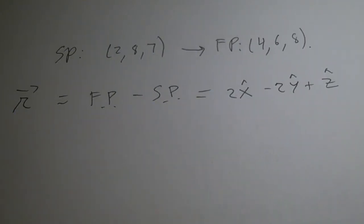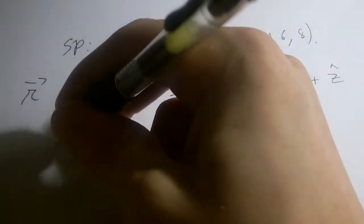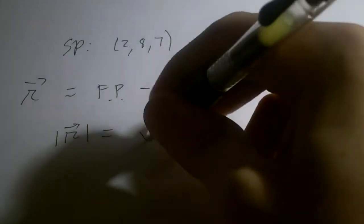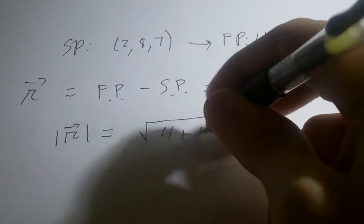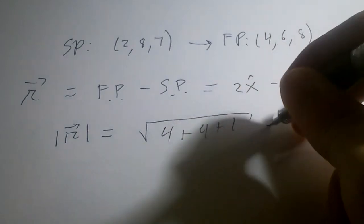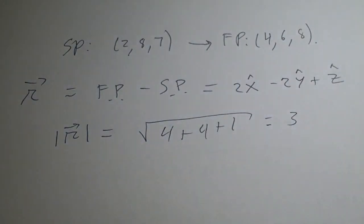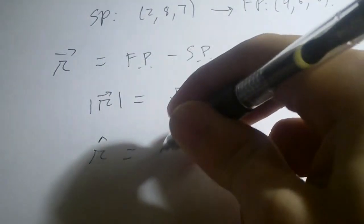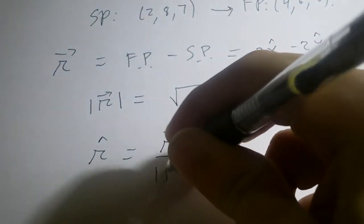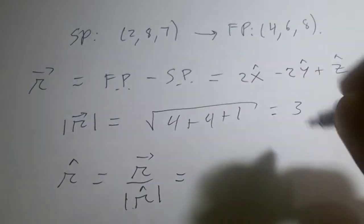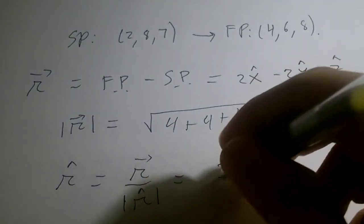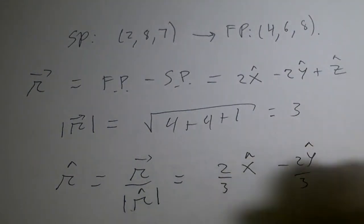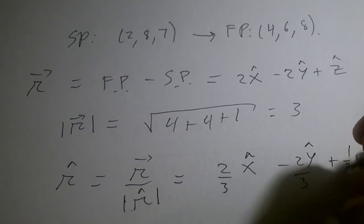Now to find the unit vector, you have to find the length of the separation vector. This is the square root of 4 plus 4 plus 1, which is 3. So r-hat is r over the length of r — divide everything by 3 — giving (2/3) x-hat minus (2/3) y-hat plus (1/3) z-hat.